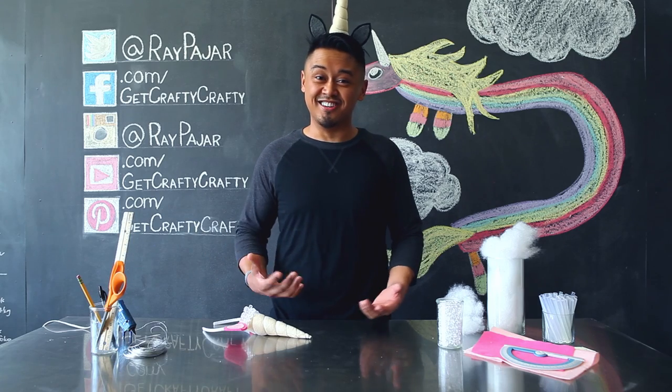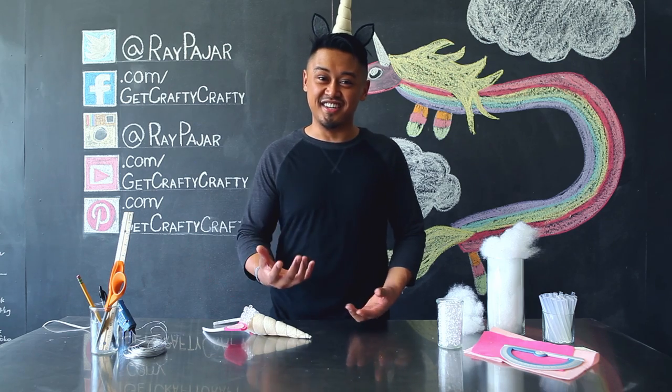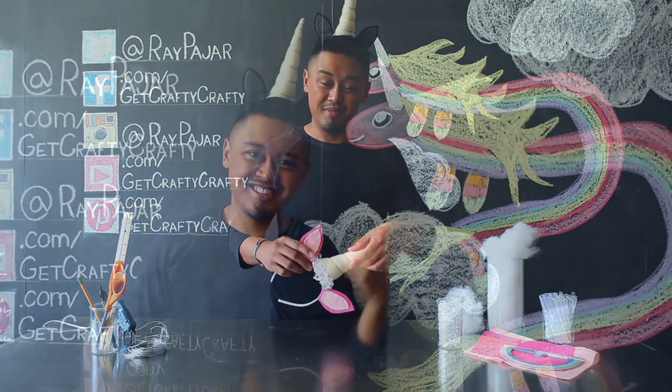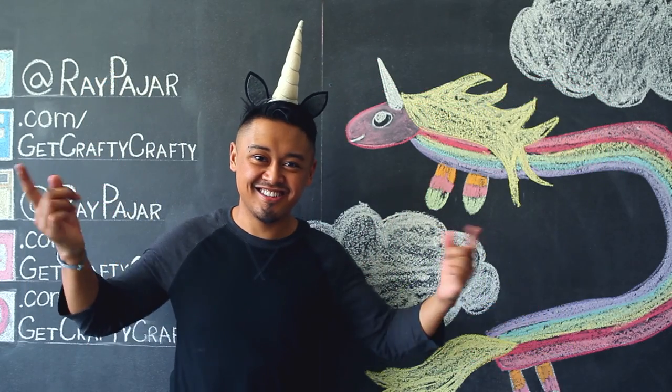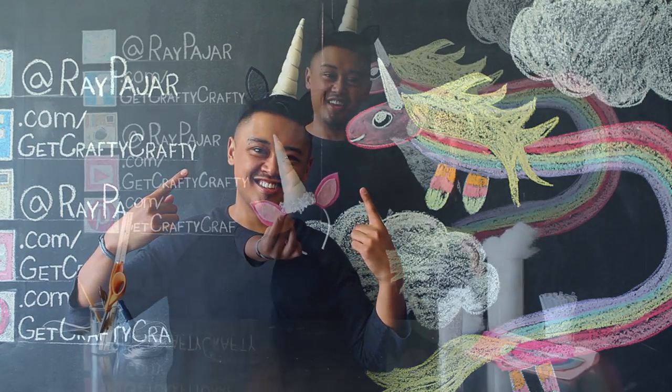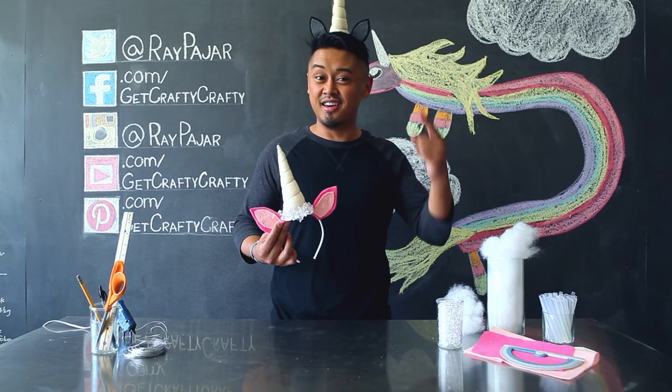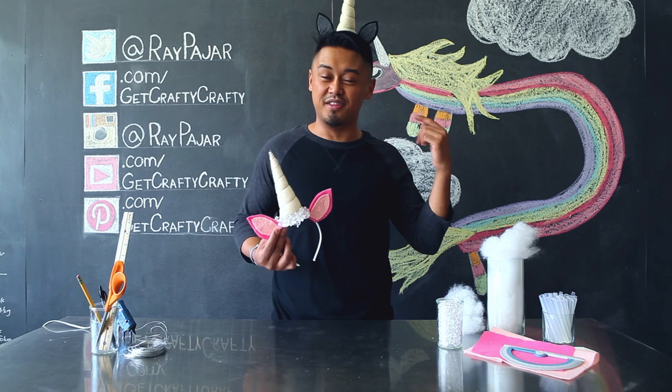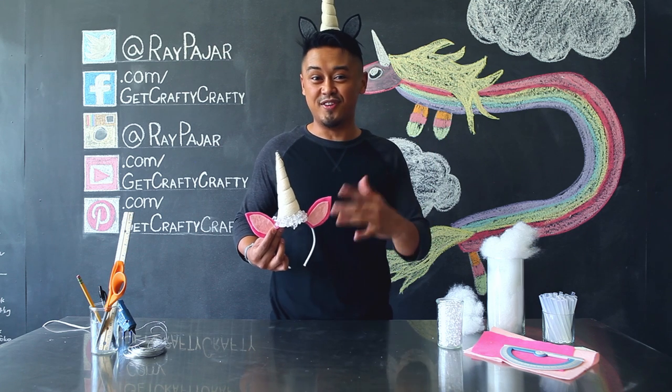Hey guys, Ray Bahar from Get Crafty Crafty and today I'm gonna show you guys how to make this DIY unicorn horn inspired by Lady Rainicorn from Adventure Time and Lord Monochromocorn from the Adventure Time special Fiona and Cake.